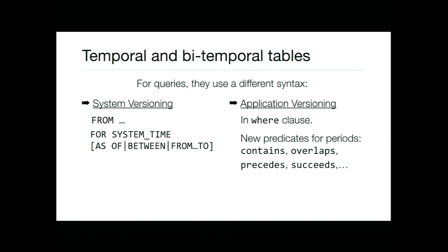The standard provides tools for application versioning: new predicates like CONTAINS working on these period/range types, and a primary key syntax like PRIMARY KEY (id, WITHOUT OVERLAPS, period_name) — very similar to Postgres's exclusion constraints. For system versioning there's a FROM clause extension: you say FROM table_name FOR SYSTEM_TIME AS OF some_timestamp to access historical data; by default you only see current data. You can also say BETWEEN or FROM/TO to get a range. Application versioning uses the WHERE clause with period predicates instead.